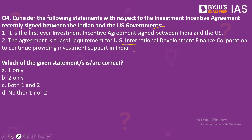Coming back to the question: Statement 1 is incorrect because another IIA was signed in 1997, and the recent one supersedes it — so it is not the first ever. Statement 2 is correct — this is the legal requirement for DFC to continue providing investment support in India. Therefore, the right answer is option B: 2 only.